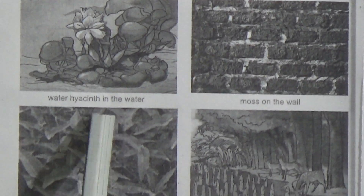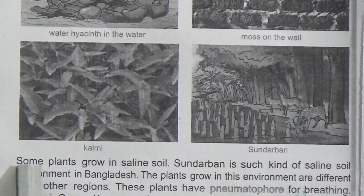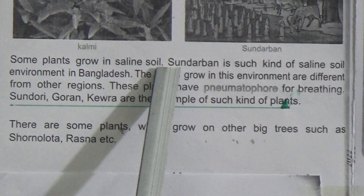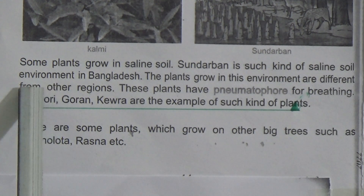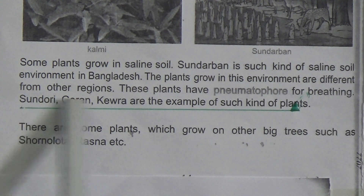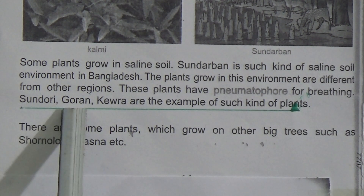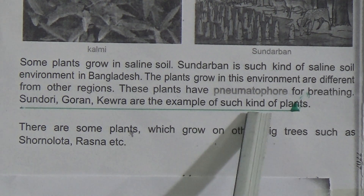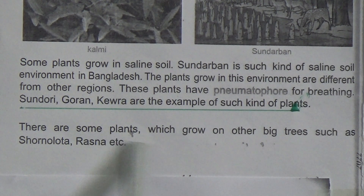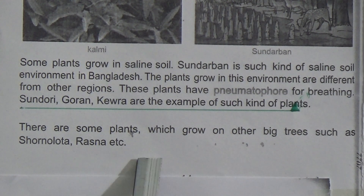This is a picture of a mango tree in sunny places. This is water hyacinth in the water. This is moss on the wall. This is a picture of kolmi. Some plants like Sundurbon mangroves grow in saline soil. Shunduri, goran, and keora are examples of such plants — underline this line. There are also some plants that grow on other big trees, such as sonolata and rasna — underline this line.